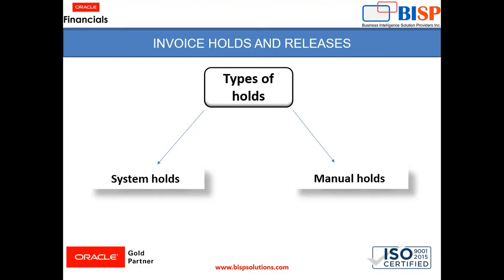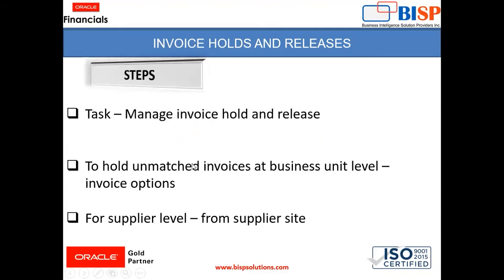Now, manual holds. These are the holds which we can create on the invoice. For example, if you don't have the amount in your bank account, you can create a manual hold and activate it on the invoices. When you have the amount in your bank account, you can release that hold and proceed with the payment. So these were the two types of holds.